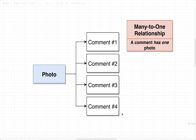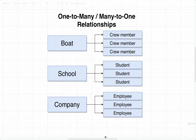Let's take a look at a few more examples. We've got boat and crew member, schools and students, companies and employees — these are all examples of one-to-many or many-to-one relationships, depending upon the perspective you're viewing the relationship from. We would say that a boat has many crew members, a school has many students enrolled, and a company has many employees.